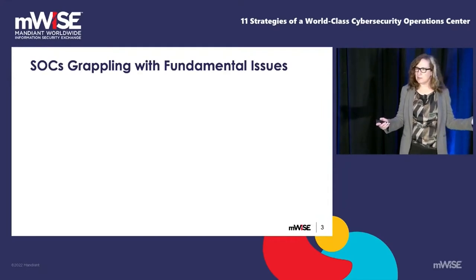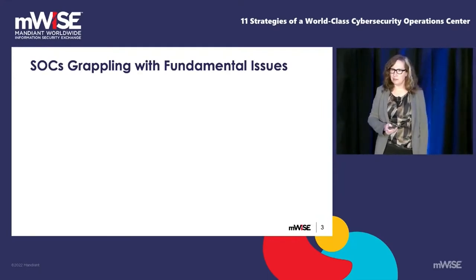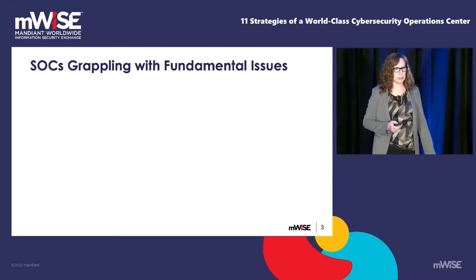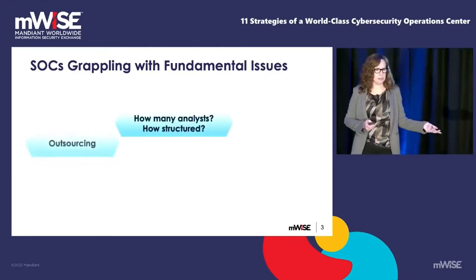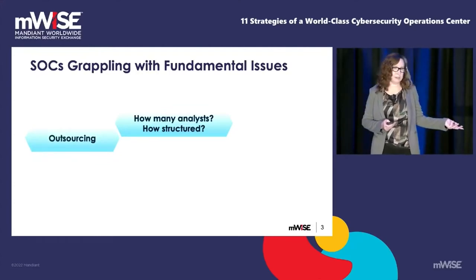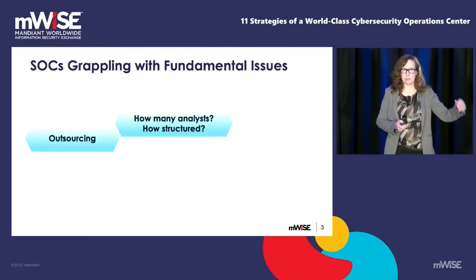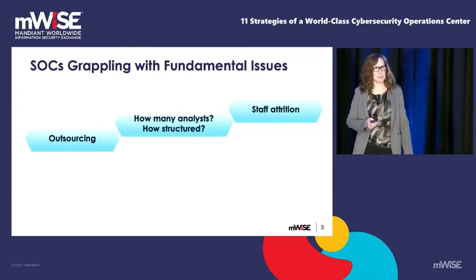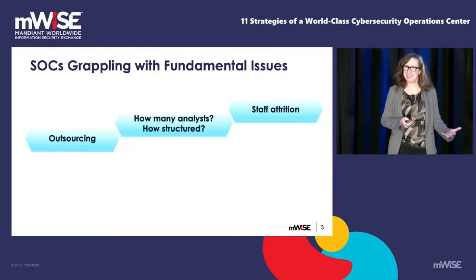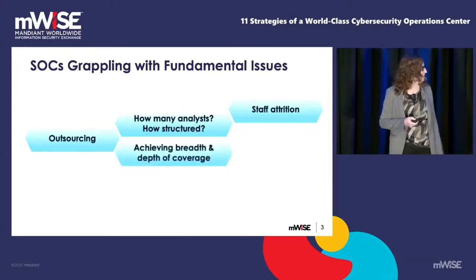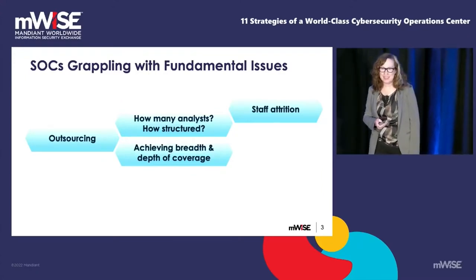So, security operations — we're all grappling with all kinds of things, whether you're small or large. How many analysts do you need? How should it be structured? Do you have enough people to structure it? Should you just outsource the whole thing? If you have an incident, just call a service that helps you out. Staff attrition — you bring in great staff members who get familiar with your environment and then leave. So how do you deal with that? And how do you achieve the breadth and depth of coverage of your sensors?